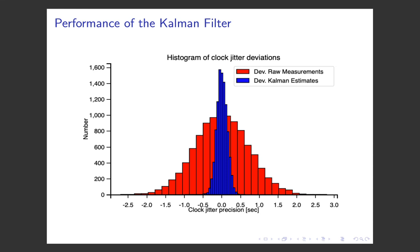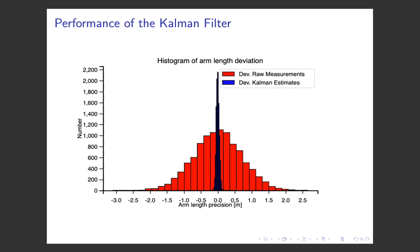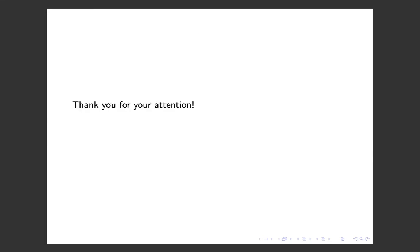Jan Wang, a former PhD student at the Albert Einstein Institute, wrote a first version of the LISA Kalman filter connected to a simple LISA simulator. I took the measurement data from his simulator and imported it into my Kalman filter. These are the results for the estimation of the clock jitter. In red, you can see the deviation of the simulated raw measurements from the simulated true values. In blue, you can see the deviation of the Kalman filter estimates from the simulated true values for the clock jitters. My results are perfectly matching the results of Jan Wang, and moreover, you can see that the Kalman filter is reducing the uncertainty in the clock jitter estimation. The same holds for the arm length estimation — the Kalman filter is also reducing the uncertainty there. Thank you for your attention.